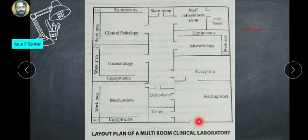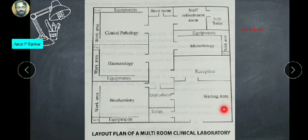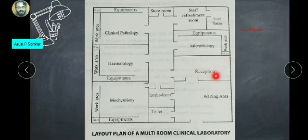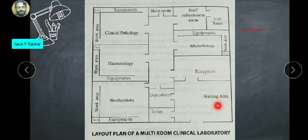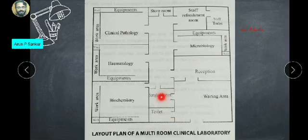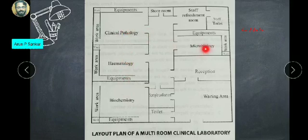On the right side there is an entry, then a waiting area. After the waiting area, there is a sample collection area. Once the sample is collected, there are departments: biochemistry lab, hematology, clinical pathology, and microbiology. Samples are distributed to various labs through a common corridor.